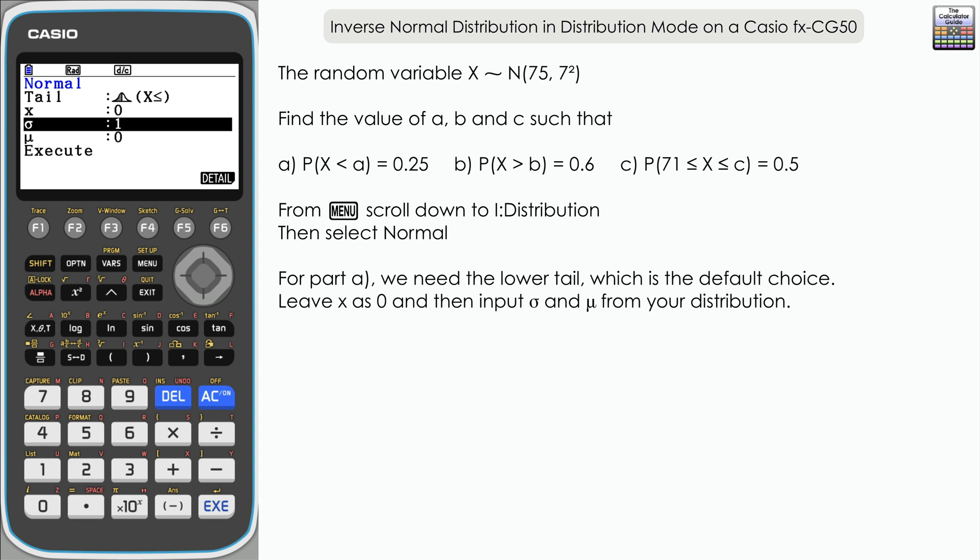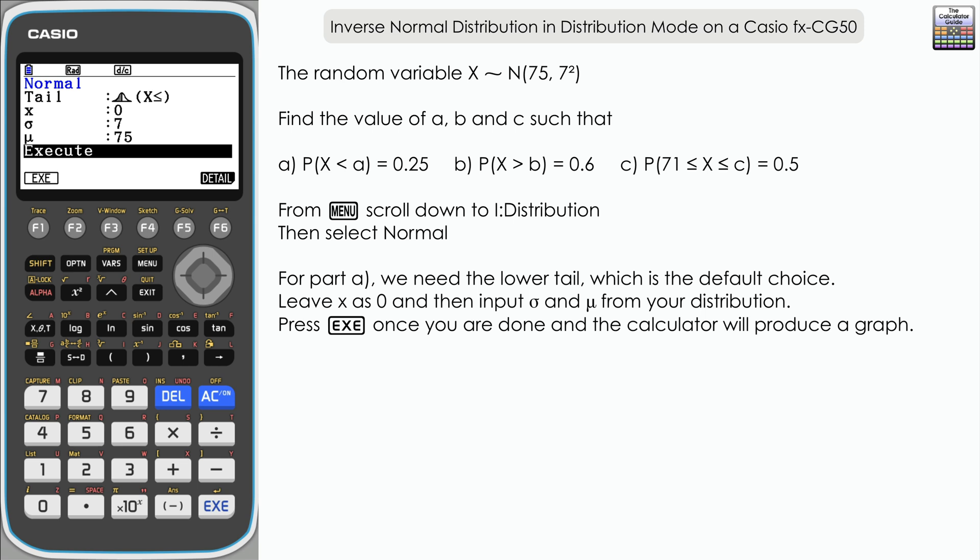Well, that's seven. Remember, the distribution shows us the variance seven squared. And then mu is the mean, which is 75. Let's execute. You can see the graph of our distribution here.